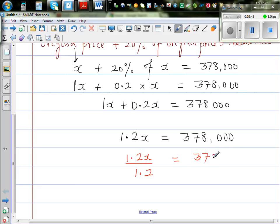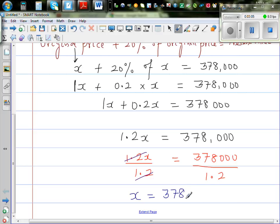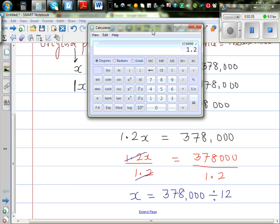The 1.2 gets cancelled, so your final answer is X is equal to 378,000 divided by 1.2. You can use a simple calculator, so I'll say 378,000 divided by 1.2. Let me scroll this to this side. Equal. So it is $315,000.